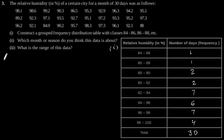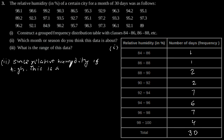Now, the second part: Which month or season do you think this data is about? Considering this grouped frequency distribution table, we can observe that since relative humidity is high, this is a month of the rainy season.